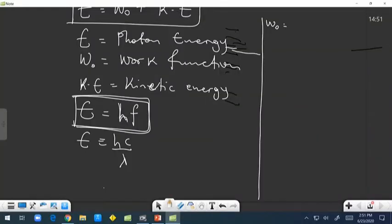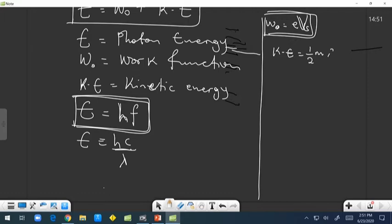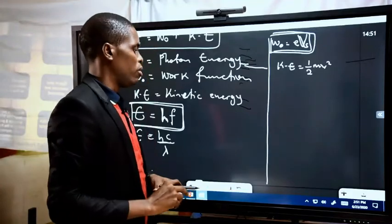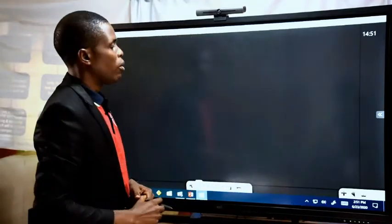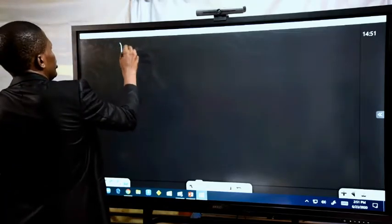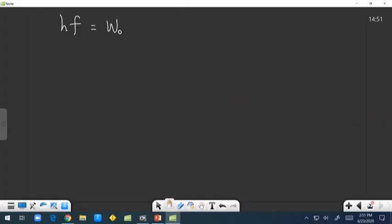For kinetic energy, KE = ½mv², where m is the mass and v is the velocity of the electrons. So the energy of the photon, HF, is equal to W₀ + ½mv². We can make kinetic energy the subject of formula: ½mv² = HF − W₀, or rewritten as E_photon − W₀ = ½mv².